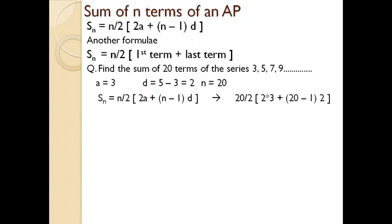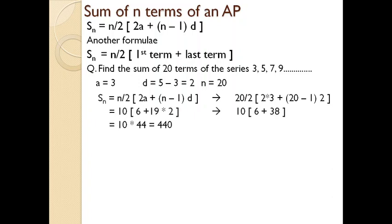By substituting the values in the equation S_n = (n/2) × [2a + (n−1)d], you will get (20/2) × [2×3 + (20−1)×2]. By using basic mathematical operations you will arrive at the value 440. That is the sum of all 20 terms in the series starting from 3, 5, 7, and 9.